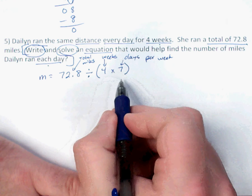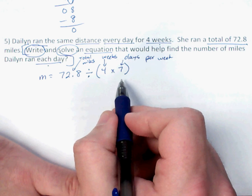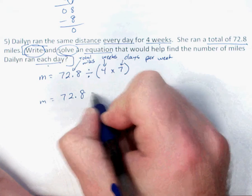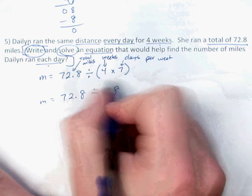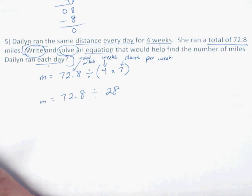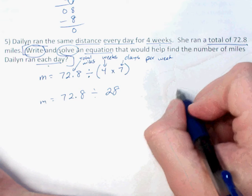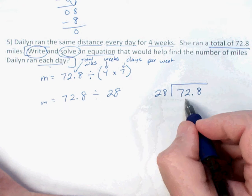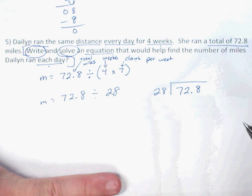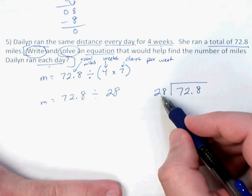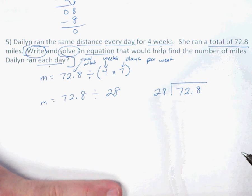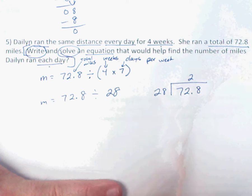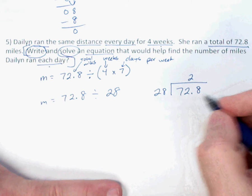Order of operations says I need to do what's in the parentheses first: 4 times 7 is 28. So the equation is M = 72.8 ÷ (4 × 7). Now I do my division off to the side. 28 is pretty close to 30, and 30 goes into 72 about twice — three times 30 would be 90, which is too much; two times 30 is 60, which is pretty good.